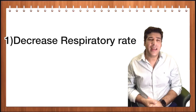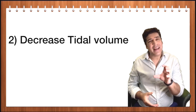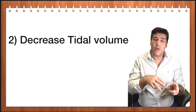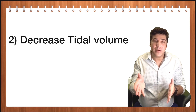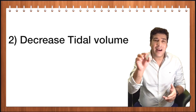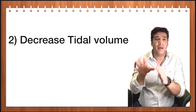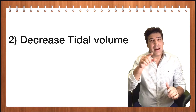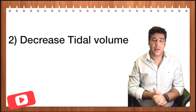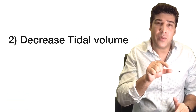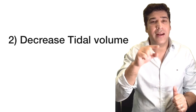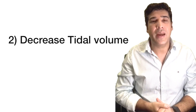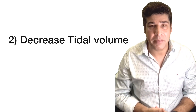The second important thing in volume control ventilation: you can decrease the tidal volume. By decreasing the volume, you are giving less volume to the patient and less time will be required to deliver that tidal volume. So you are decreasing the inspiratory time and hence increasing the expiratory time, and by this you can to some extent get rid of the auto PEEP.